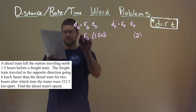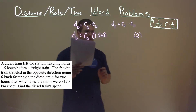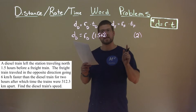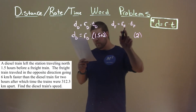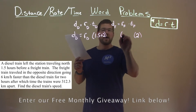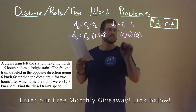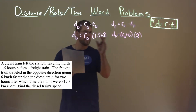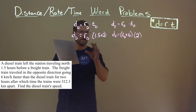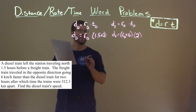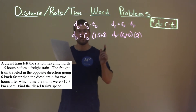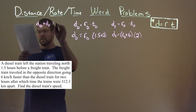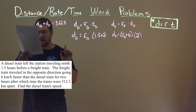Now we want to find the rate of the diesel train, so we don't know that, and the distance of the diesel train we don't know either. But the freight train is traveling in the opposite direction but six kilometers per hour faster than the diesel train, so the rate of the freight train can be written as the rate of the diesel train plus six. They say after this whole thing happened, the trains were 312.3 kilometers apart and they're traveling in opposite directions, so the distance of the diesel train plus the distance of the freight train is equal to 312.3 kilometers.